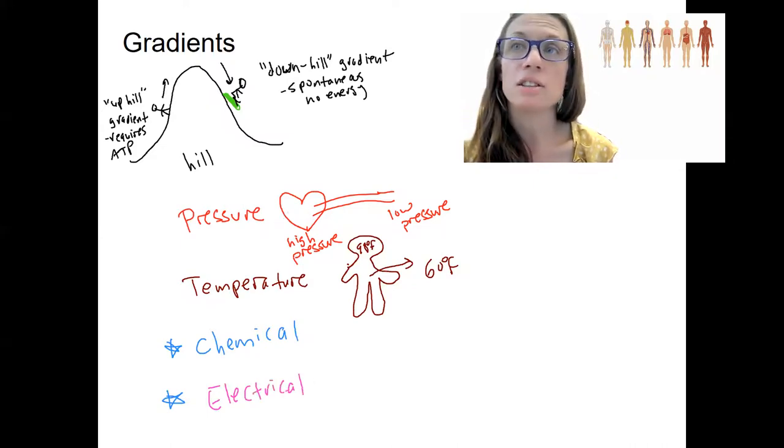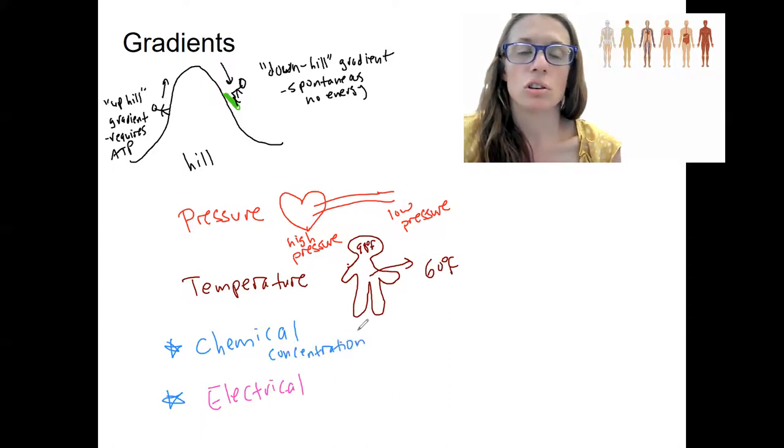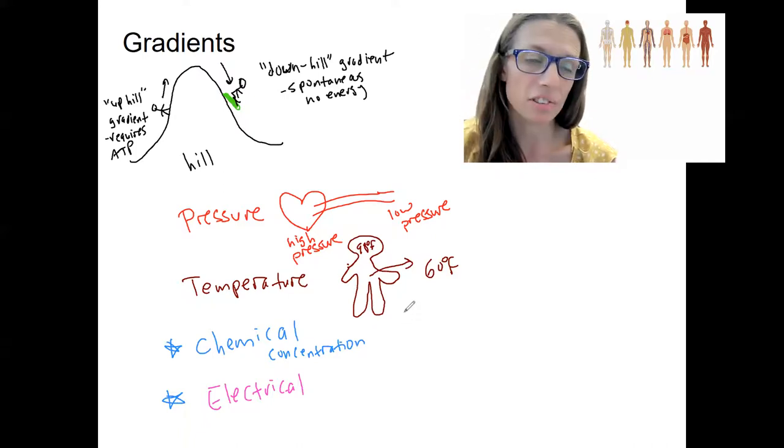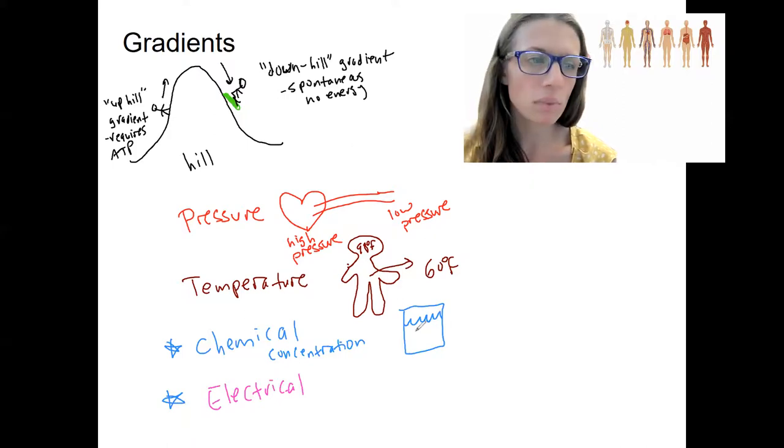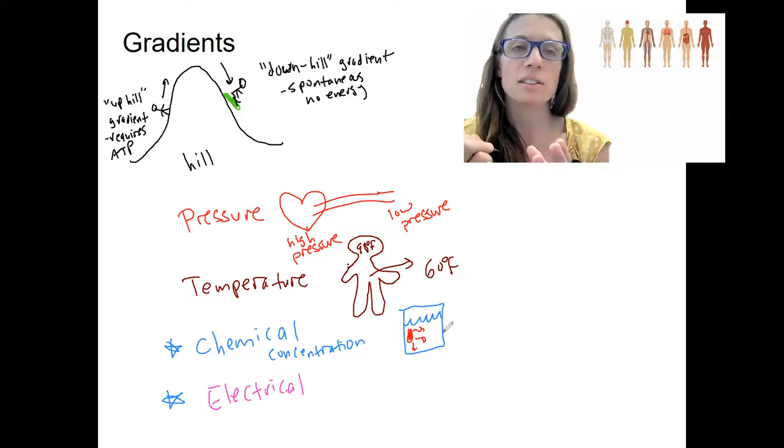A chemical gradient is just a difference in a concentration of a chemical. This chemical could be sugar, water, examples from your life. Let's say that you've got a glass of water and you put some like food dye in it. That's a gradient, concentration gradient. And what's going to happen over time is that concentration gradient will decrease as that dye spreads down its gradient.